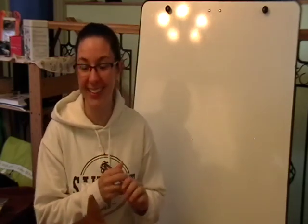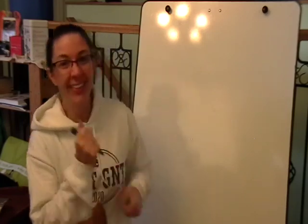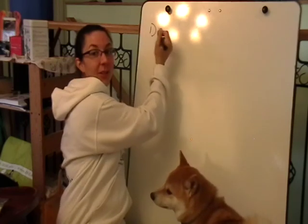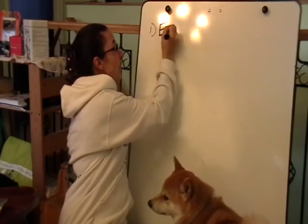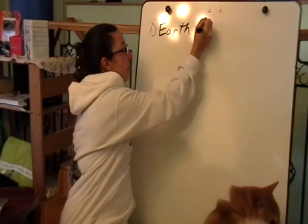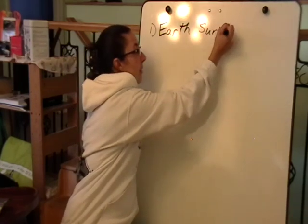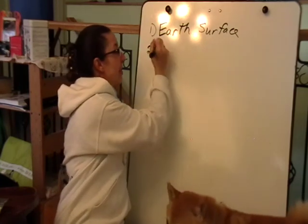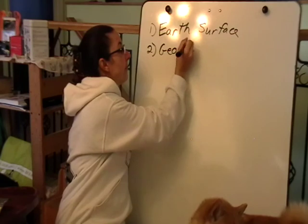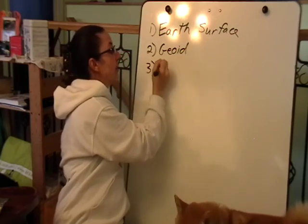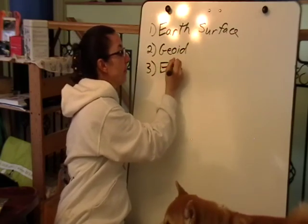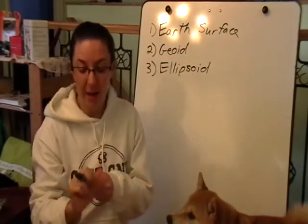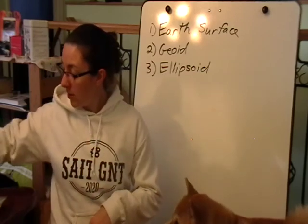The three geomatic surfaces are: the first one, which is our earth's surface; the second one, which is the geoid; and the third one, which is our ellipsoid. When we're dealing with these three surfaces, the very first surface we often think about is the ellipsoid, or actually a sphere.